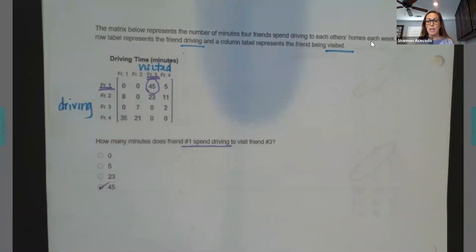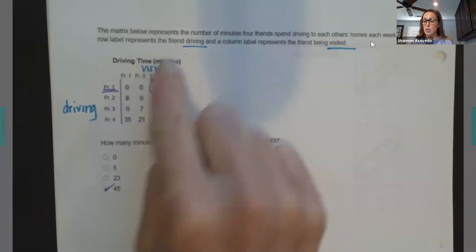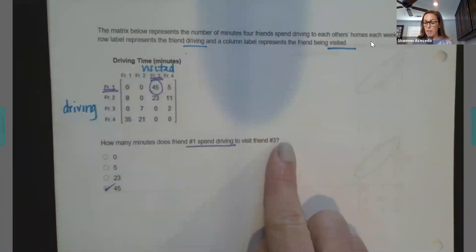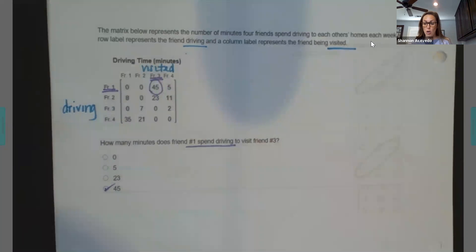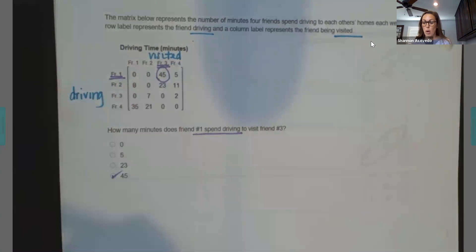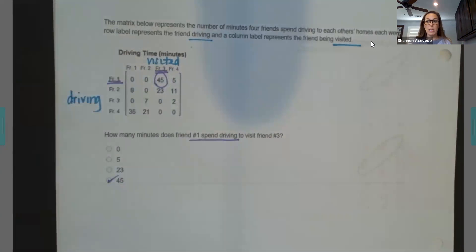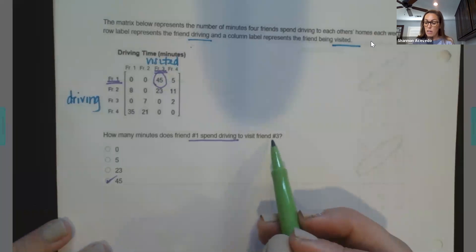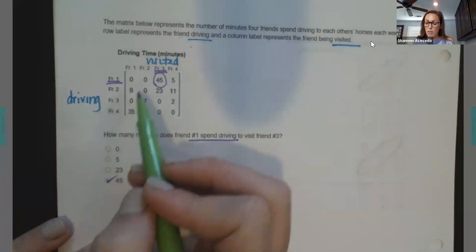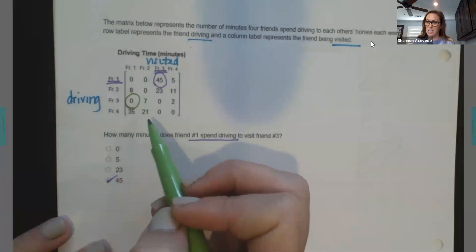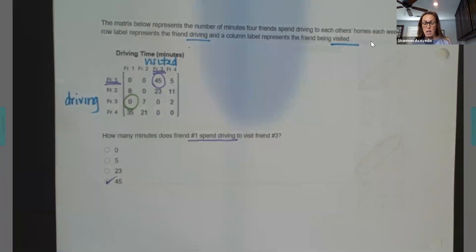So my biggest thing for you guys is label these so that you can visually see which one, because when you're talking about a friend and a friend, it makes it hard when you see them here. How do you know which one's what? But it will tell you. Row means this. Columns is representing this. And again, I want to emphasize that if these were switched, if friend three was driving to see friend one, it was a zero. So it doesn't work the same. It's not commutative. So you need to watch out for that.